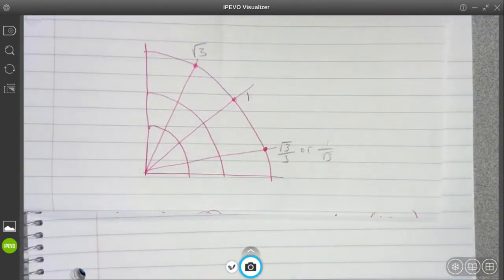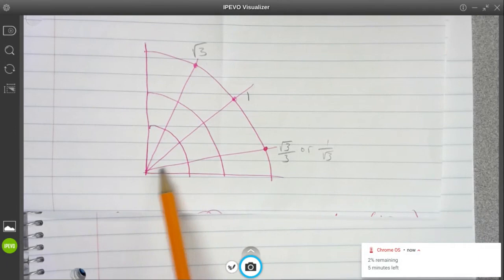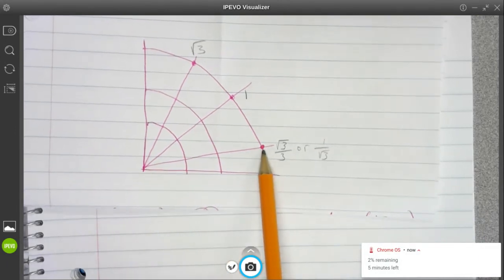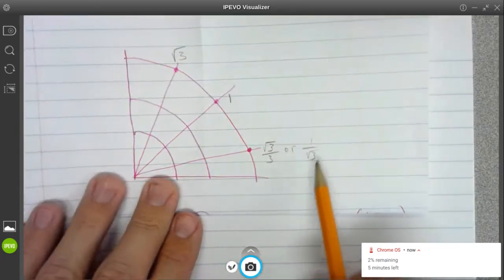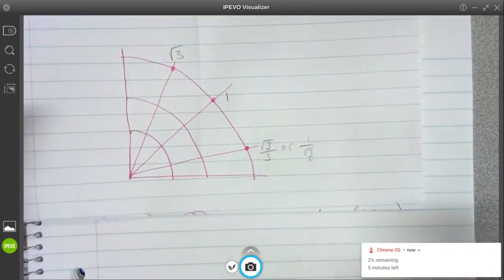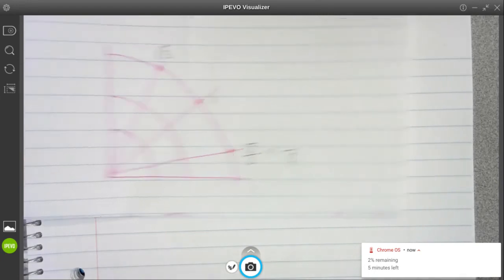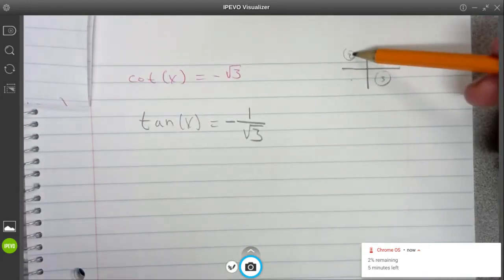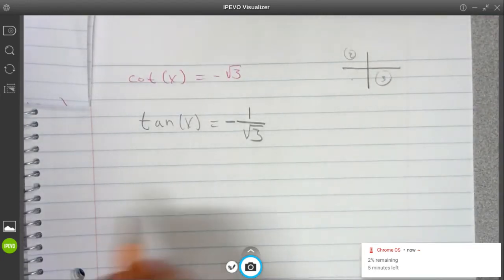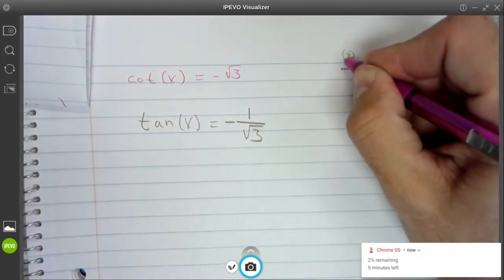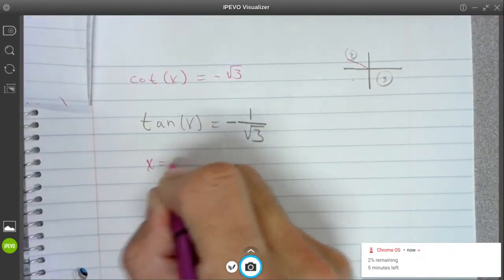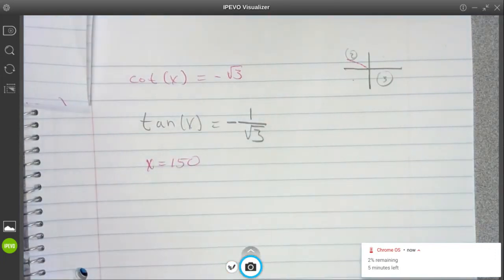So 1 over root 3 happens at my little 30 degree angles. 1 over root 3. So I'm wanting the 30 degree angle, or the one that will be a reference to it, that's in quadrant 2 and in quadrant 3.